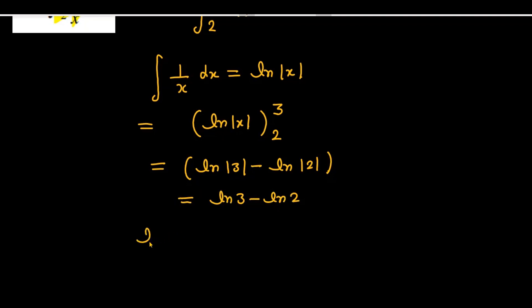Now logarithm has a property that is ln m minus ln n equals ln m upon n. So if I apply this property here, you can write this as ln 3 upon 2 and this is the answer for the given problem.